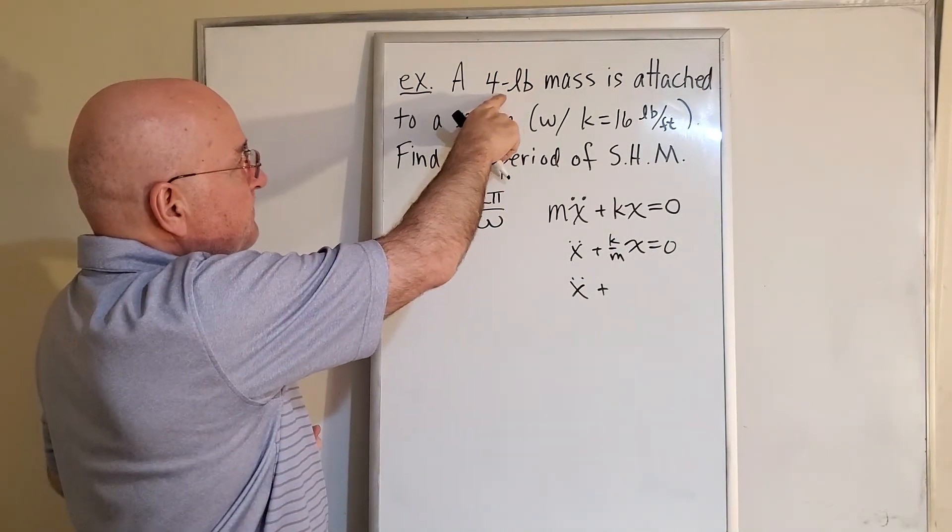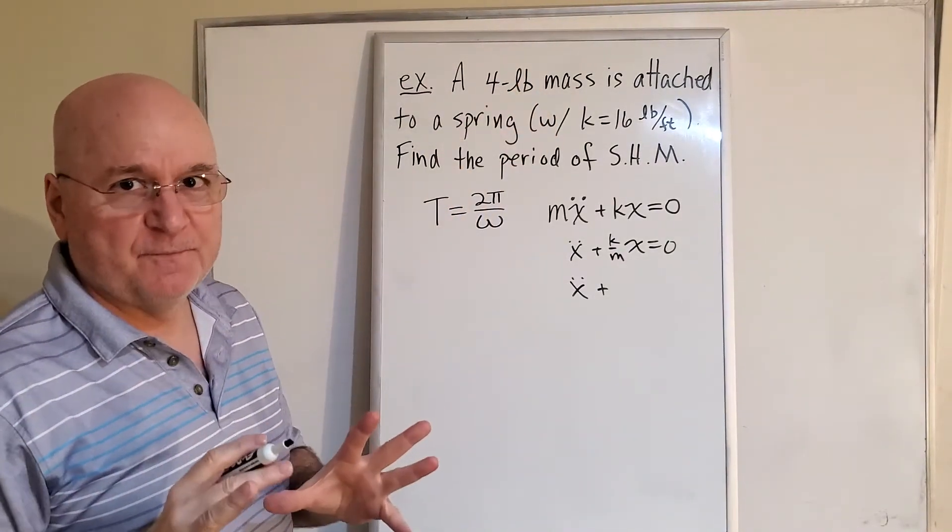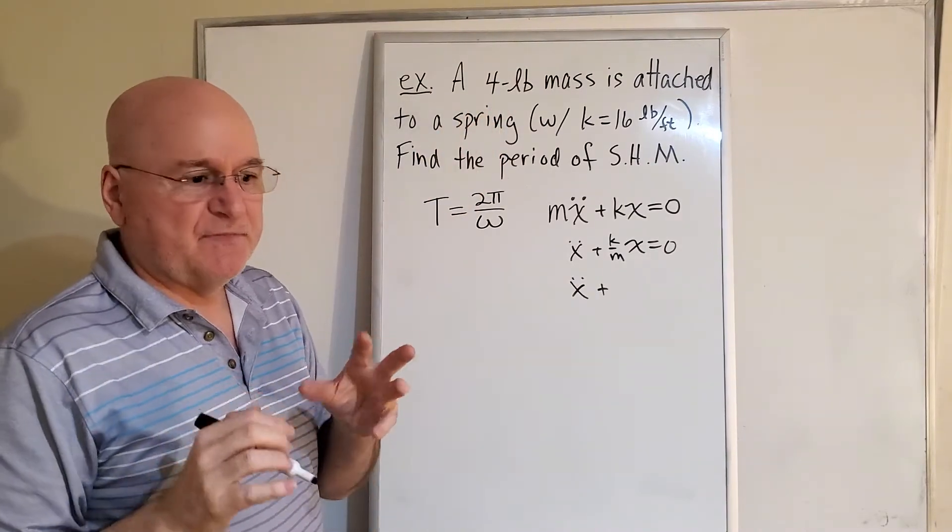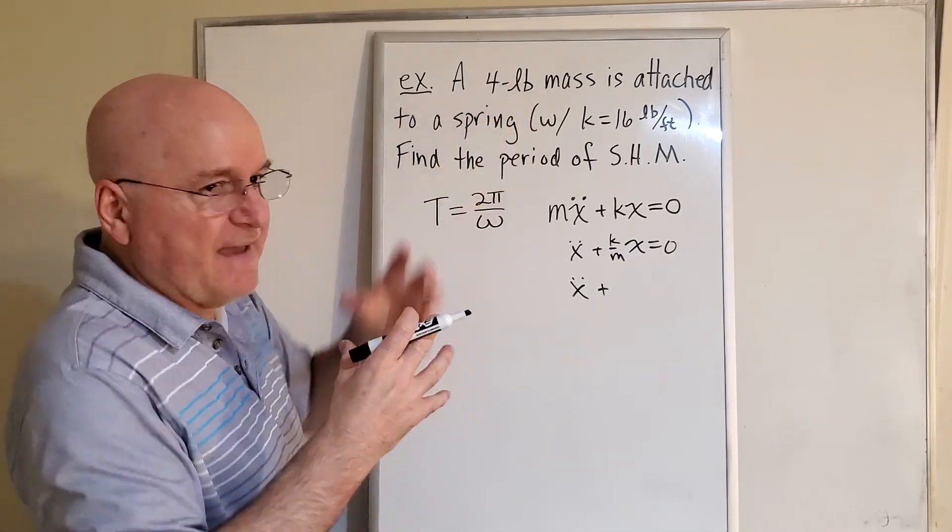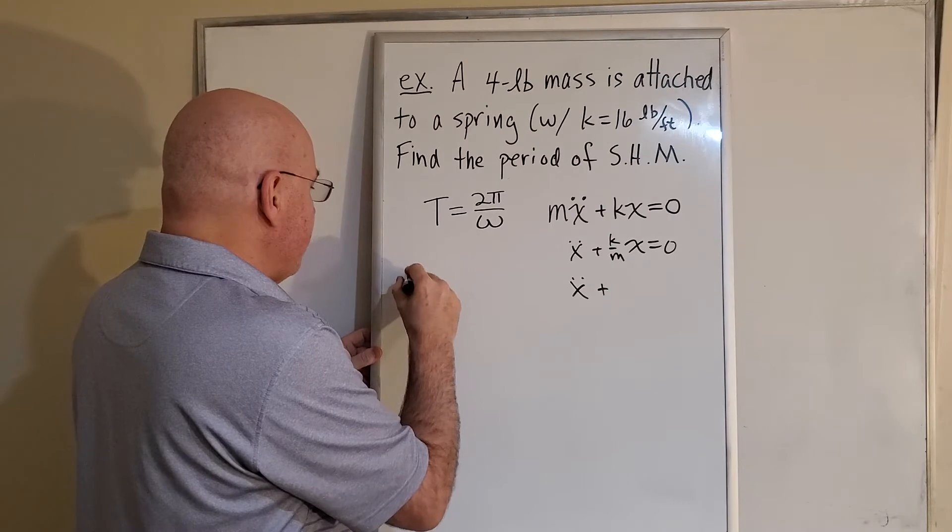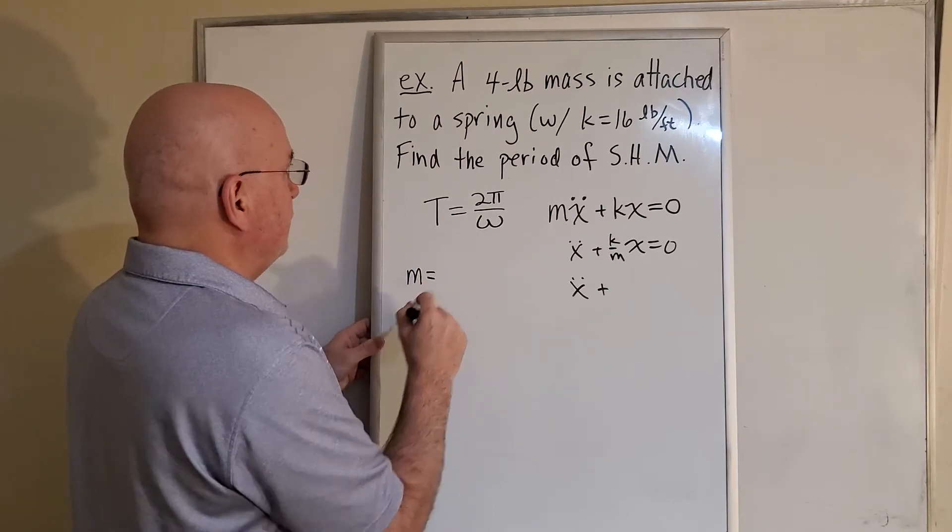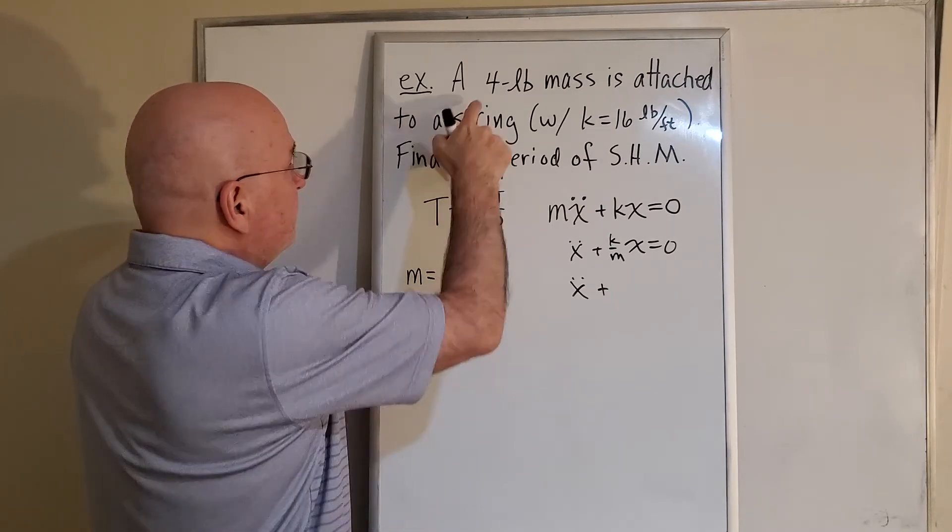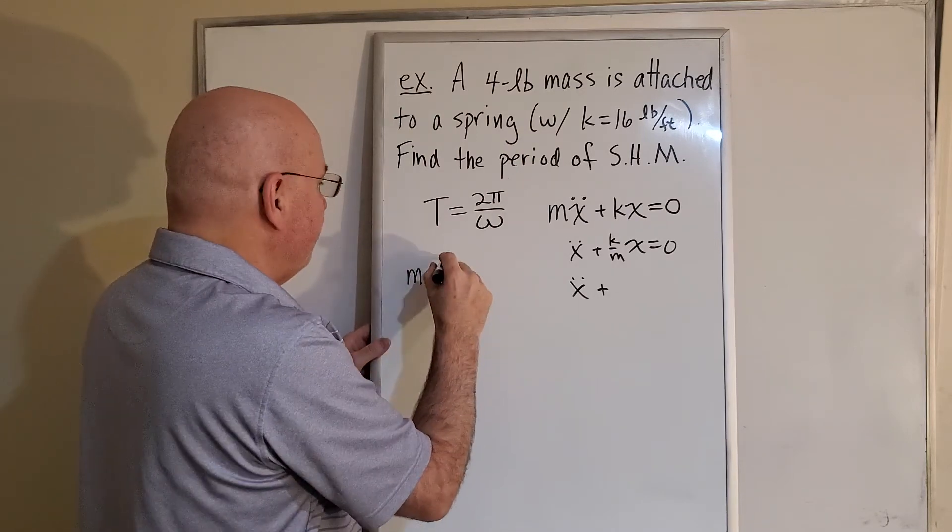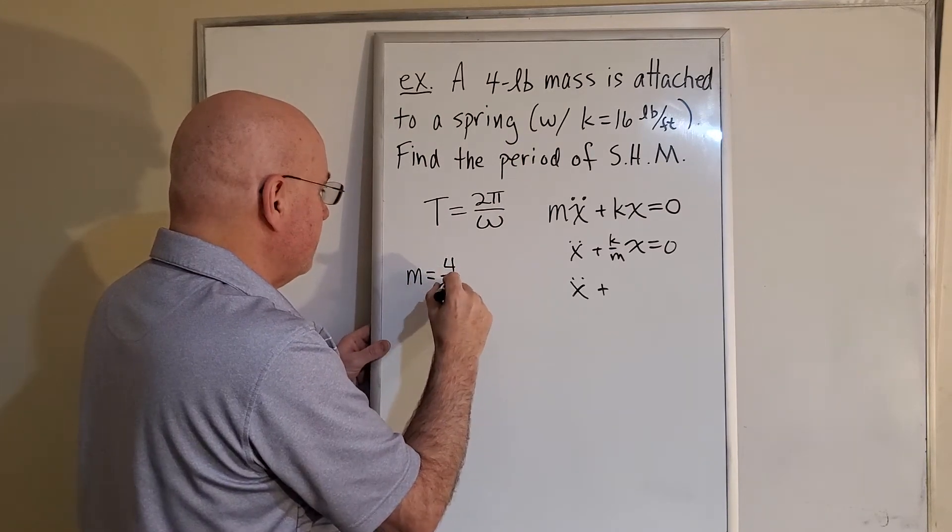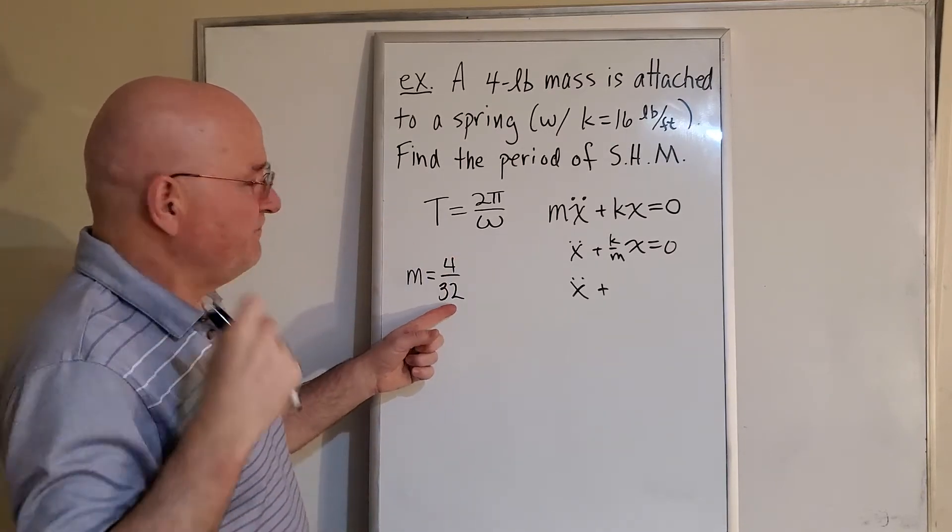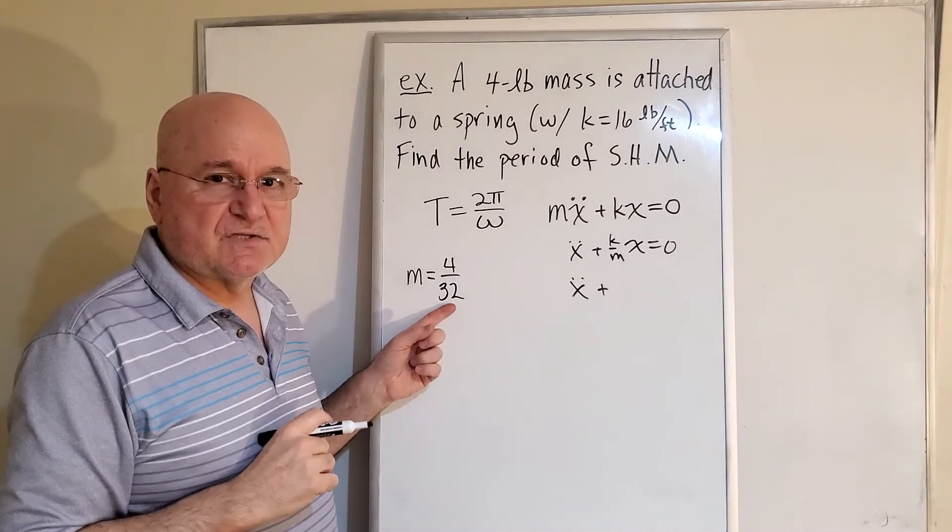this object. Okay, so here's what you need to remember to do: whenever you're given the weight of the mass that's being put on the spring, you need to say mass is equal to the number of pounds divided by gravity. So 4 over 32, for 32 feet per second squared.